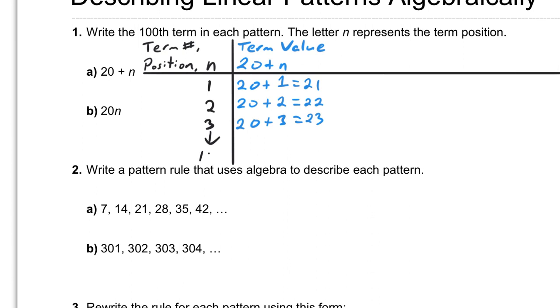The problem is, if we want to go all the way to 100, it's going to take us an awful long time to count to get there. But we can do this easily with algebra by just replacing the n with our 100. So we can say 20 plus 100 is 120, and we have found the value of the 100th term right here.